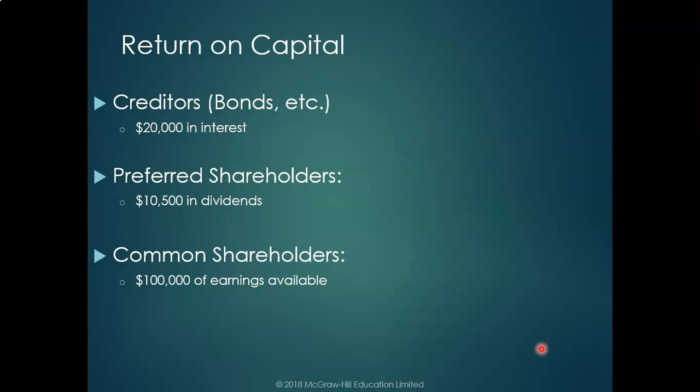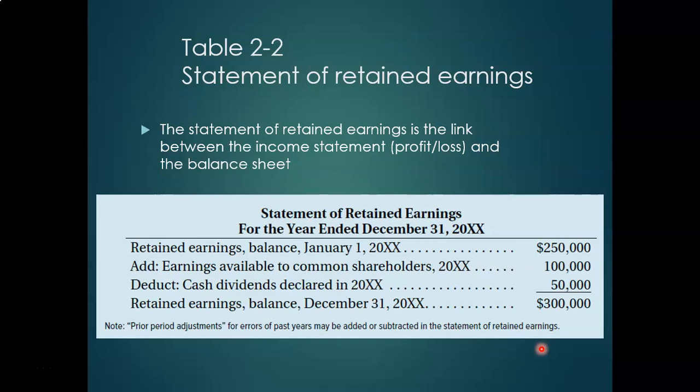Our second statement is the statement of retained earnings, which is the link between the income statement we just looked at and the balance sheet we will look at. Like the income statement, it starts with a heading identifying the company, the type of statement, and the period — for the year ended December 31st.